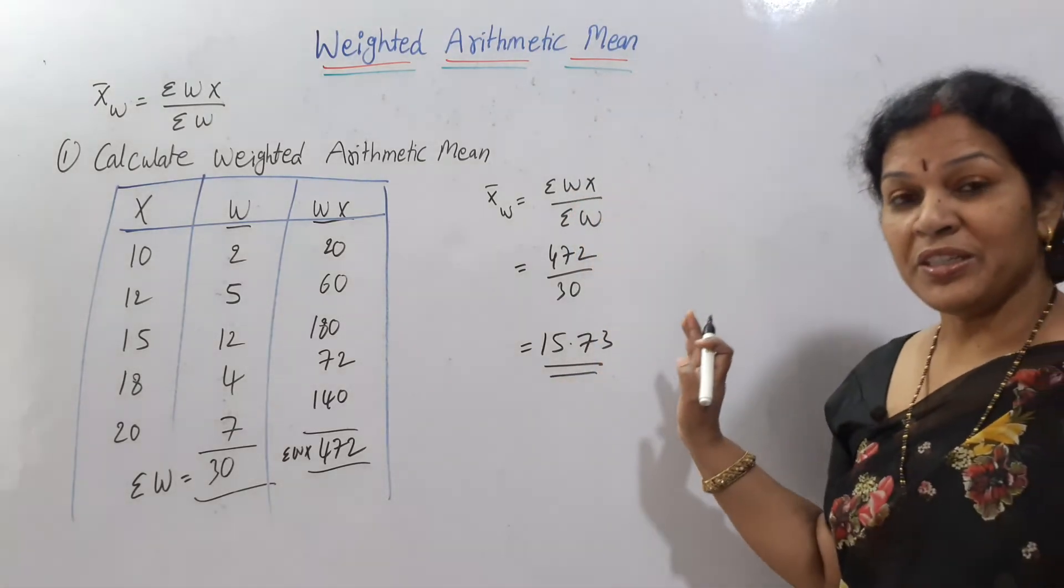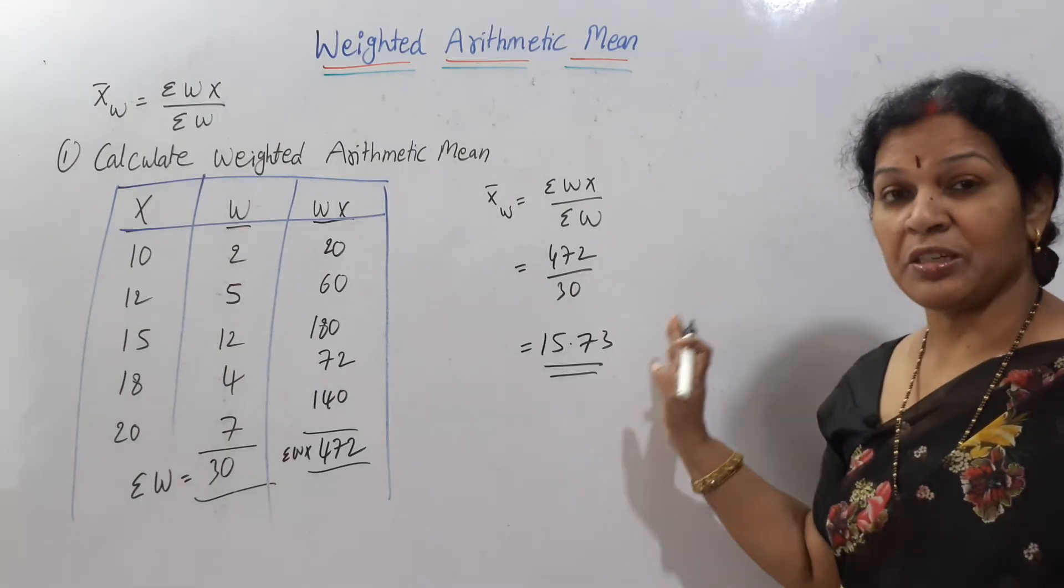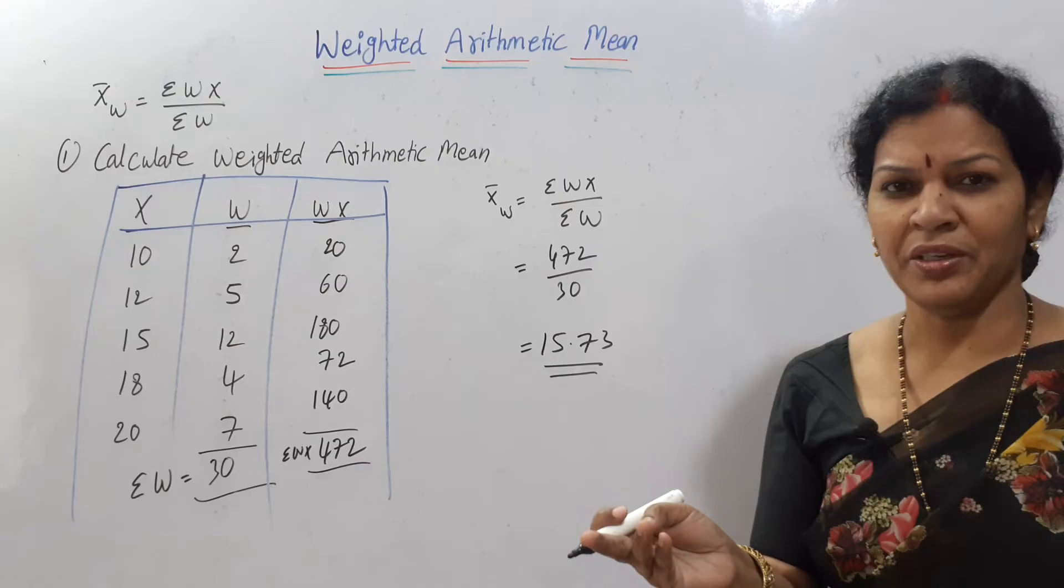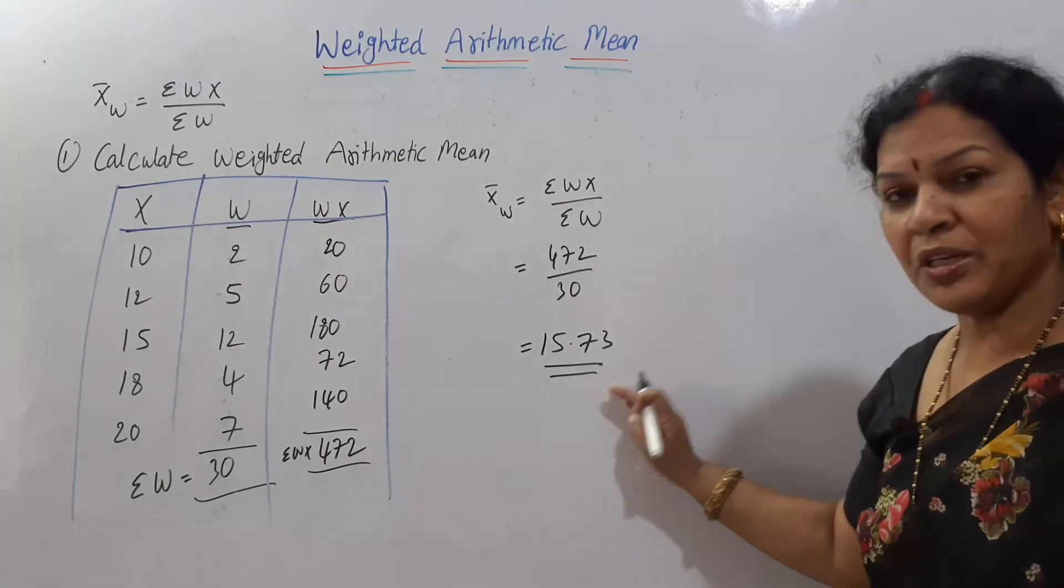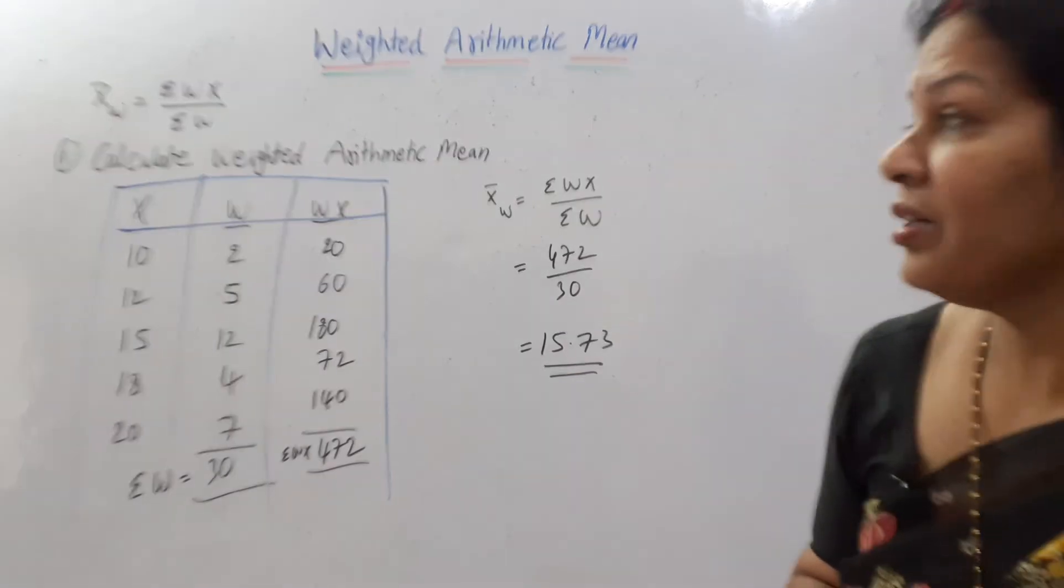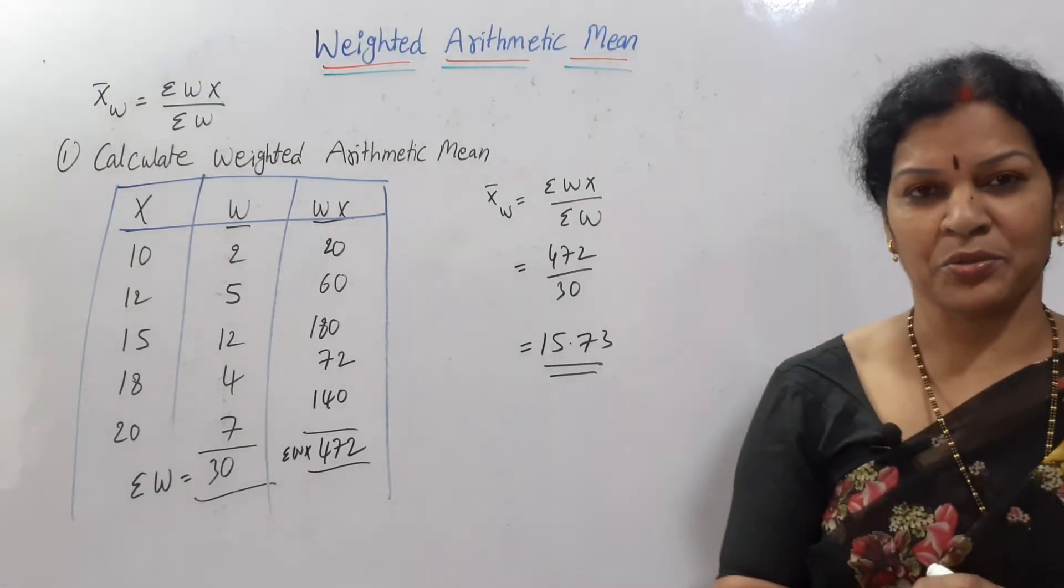This weighted arithmetic mean 15.73 represents that we have given some values to each and every number, then according to that we got weighted arithmetic mean. Am I clear?